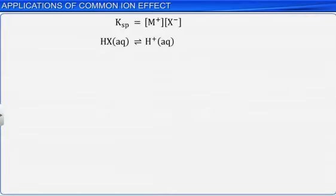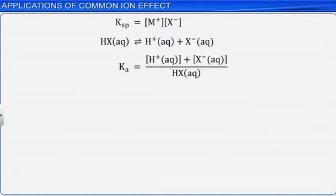Then, Ka is equal to the product of molar concentrations of H+ and X-, divided by HX concentration. On rearranging the equation, we get [X-]/[HX] equal to Ka/[H+].